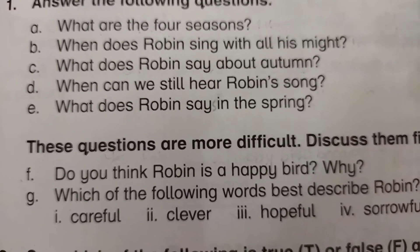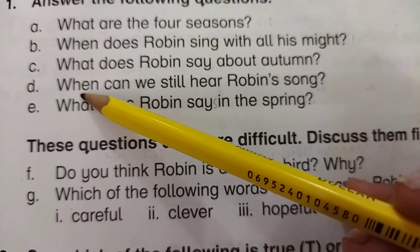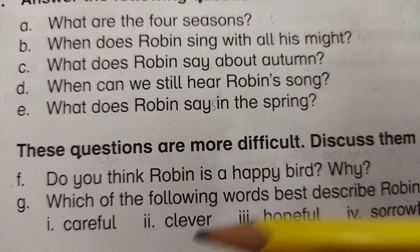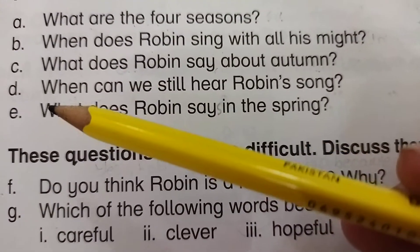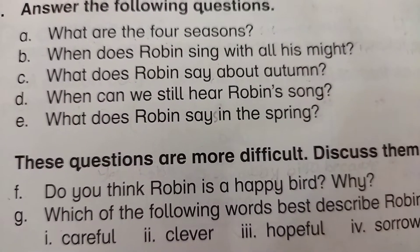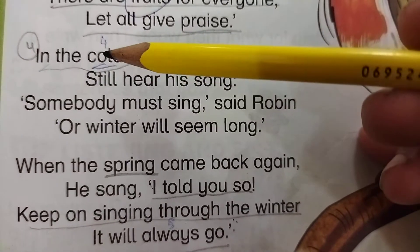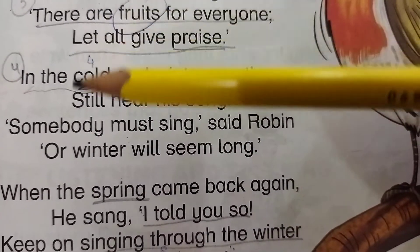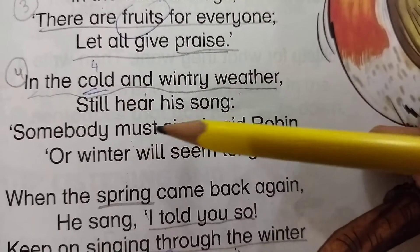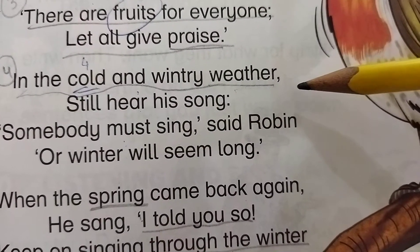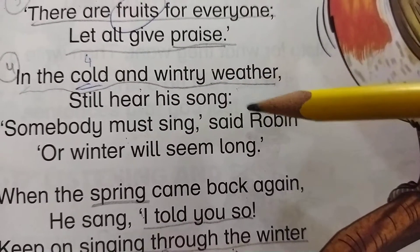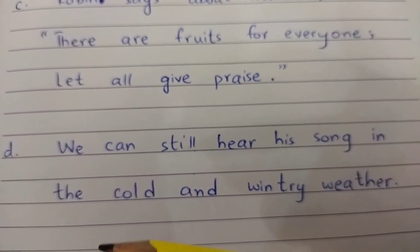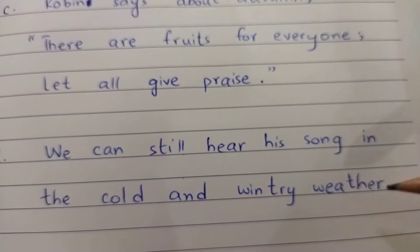Then comes part D: 'When can we still hear Robin's song?' When a question starts with 'when', we answer with something related to time. In the third stanza: 'In the cold and wintry weather, still hear his song.' So the answer is: we can still hear his song in the cold and wintry weather.